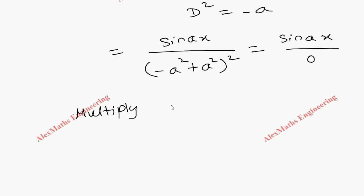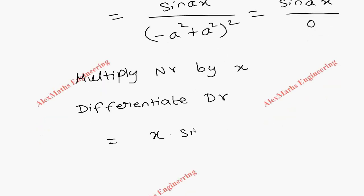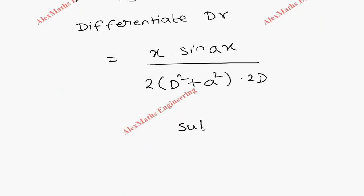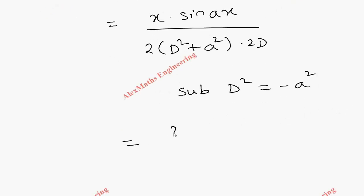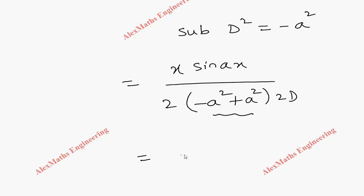So we get x·sin(ax) divided by 2(D² + a²)·2D. But once again we substitute D² = −a², giving x·sin(ax) divided by 2(−a² + a²)·2D. Since that term is zero, the entire denominator is zero again, giving x·sin(ax) / 0.